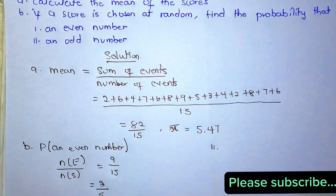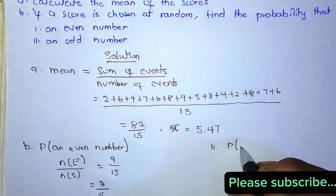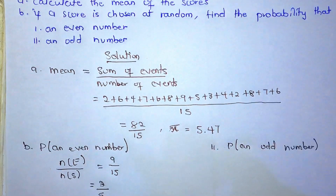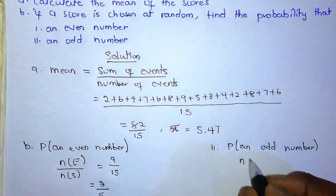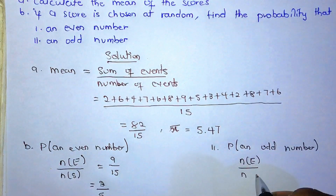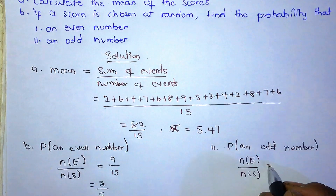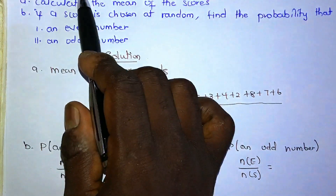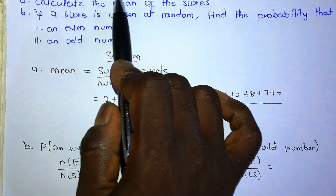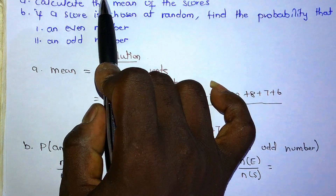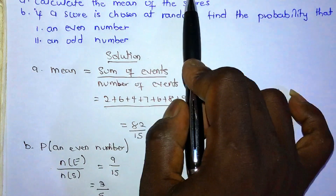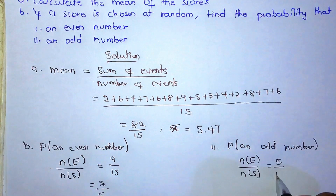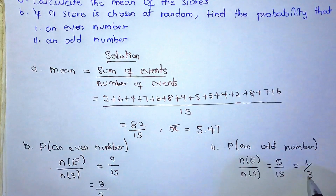Part b(ii): find the probability that it is an odd number. The odd numbers in the dataset are: 7, 9, 5, 3, 7 — that's 5 odd numbers. So probability of an odd number = 5/15 = 1/3.